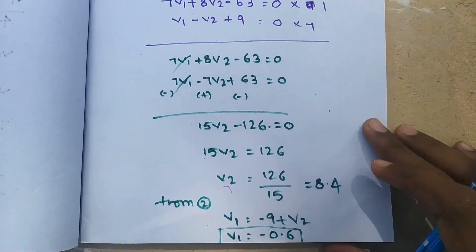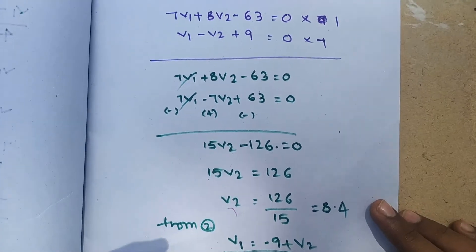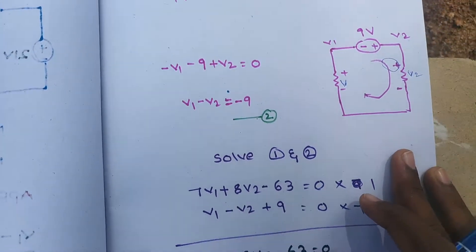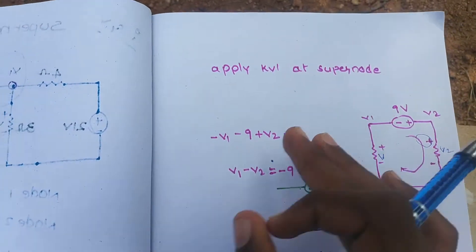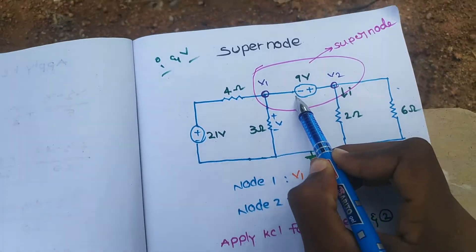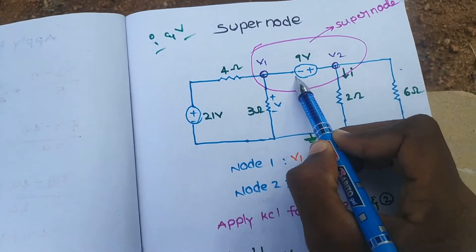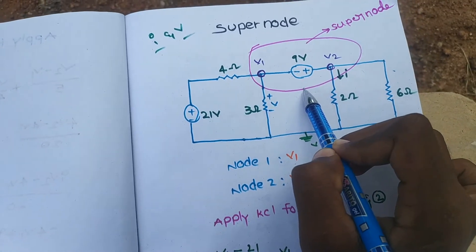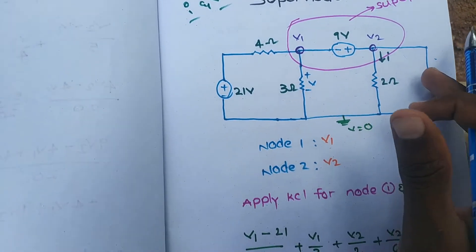We are going to apply the V1 and V2 values. Thank you. Supernode — if you have two nodes, you can use the same voltage as well, then Supernode. That is the main point. Supernode — we can use the same voltage as well.